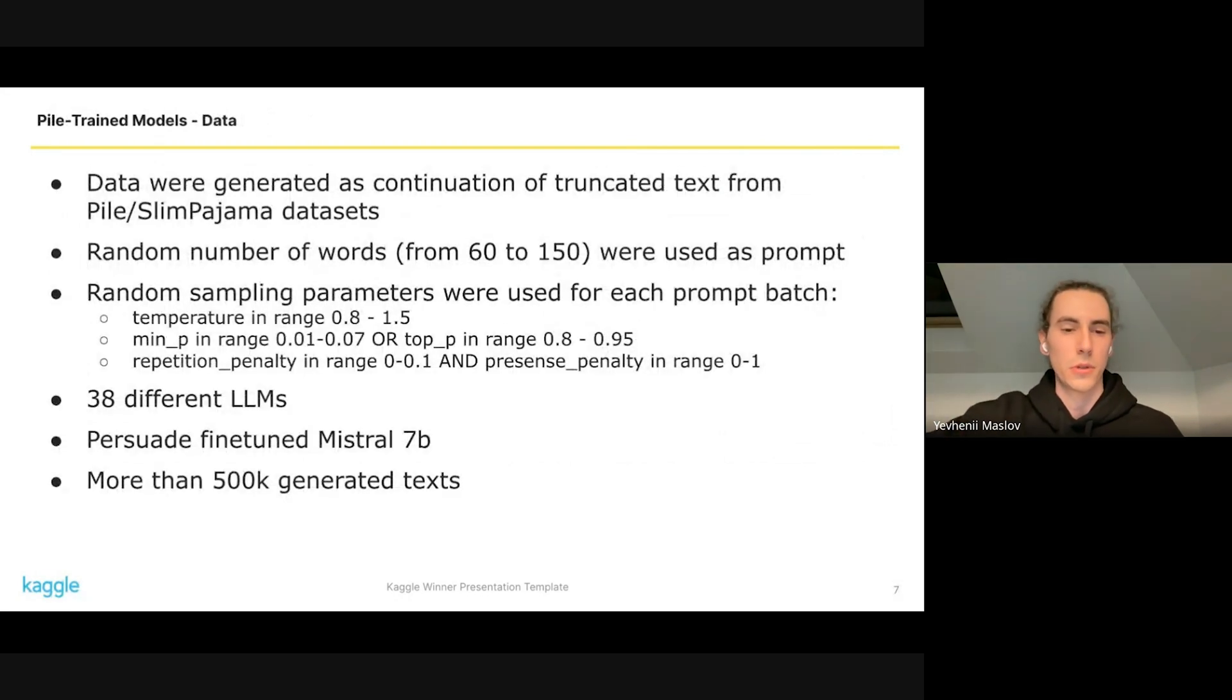The second part of our solution and probably the most important one is about the large models trained on diverse data from pile, slim pajama, and generated continuations for them. We used a small number of words as prompt and wide range of sampling parameters. We used 38 different models, one of them was Mistral 7 billion fine-tuned on Persuade essays.